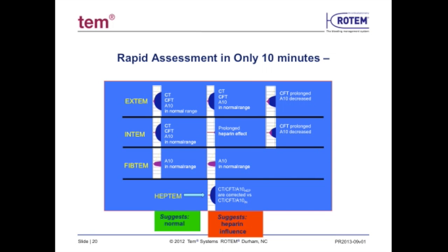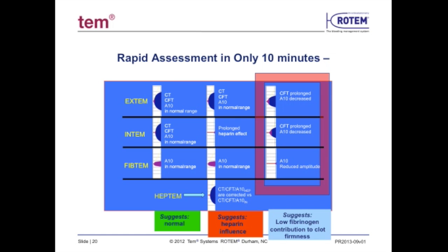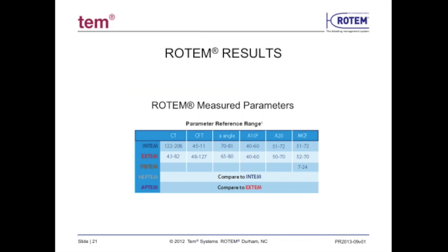In the last example, similar to the previous, both Extem and Intem demonstrate prolonged CFT and lower amplitude at A10. To differentiate whether the problem was due to low platelets or low fibrinogen, a FibTem was again performed. The FibTem now demonstrates inadequate fibrin contribution to the clot, and therefore the suggestion is that fibrinogen supplementation — as with cryoprecipitate — is needed.